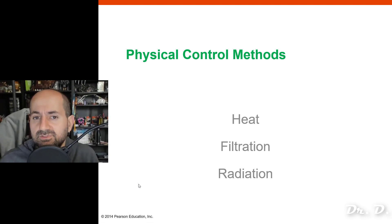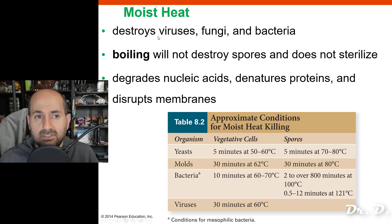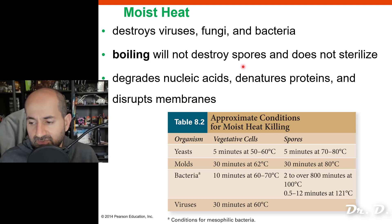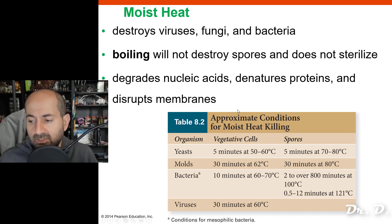Physical control methods include heat, filtration, and radiation. Moist heat — like boiling — can kill viruses, fungi, and bacteria. Boiling destroys a lot of organisms and can degrade nucleic acids, denature proteins, and disrupt membranes. But boiling does not sterilize.